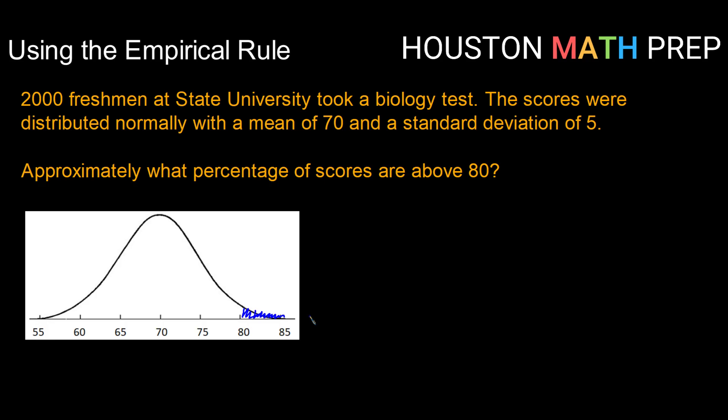So if we think about from 60 to 80, we have 95% of our data from two standard deviations below to two standard deviations above. Then outside of that, if we consider both sides, we would have 100% minus 95%. So 100 minus 95 is 5%, but we are only interested in half of that. Half of it lives over here below 60, and half of it lives up here above 80. So we want to take half of 5% to get 2.5% being above 80.